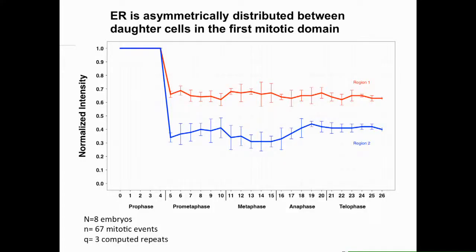We can quantitate this, and indeed one cell is getting more ER than the other. Being a bit paranoid about this — because it's weird — I asked them to check the other domains, like domain 11 and domain 4. Domain one was the only one where we saw this unequal partitioning. It's important to stress that not all domains can be viewed because of cell movement in different planes.